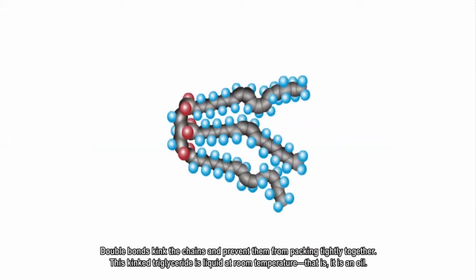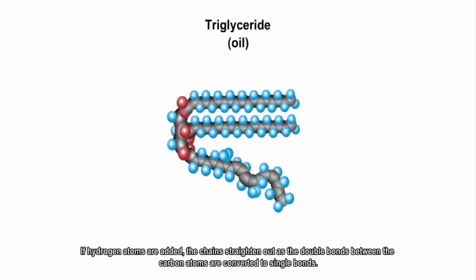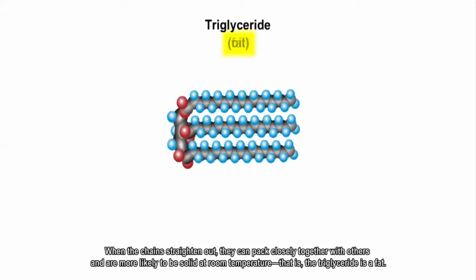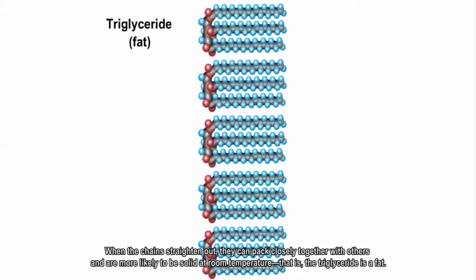Double bonds kink the chains and prevent them from packing tightly together. This kinked triglyceride is liquid at room temperature, that is, it is an oil. If hydrogen atoms are added, the chains straighten out as the double bonds between carbon atoms are converted to single bonds. When the chains straighten out, they can pack closely together and are more likely to be solid at room temperature. That is, the triglyceride is a fat.